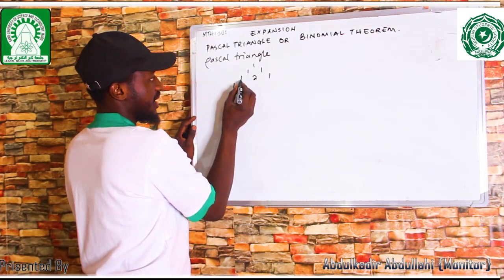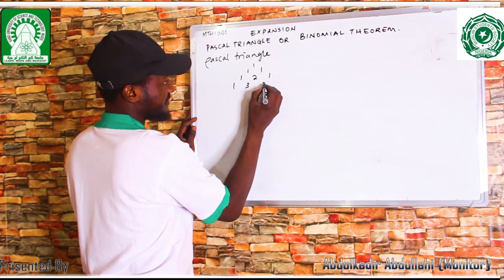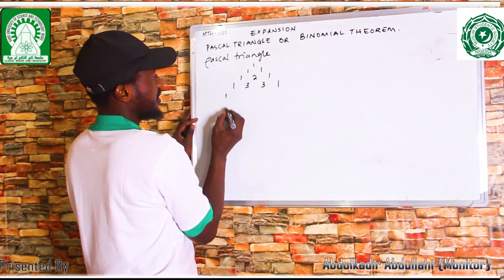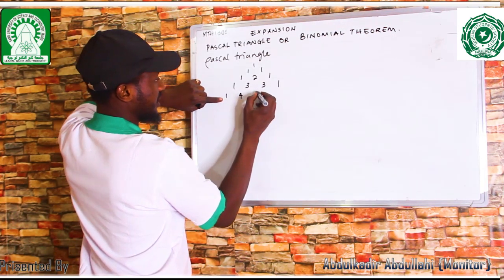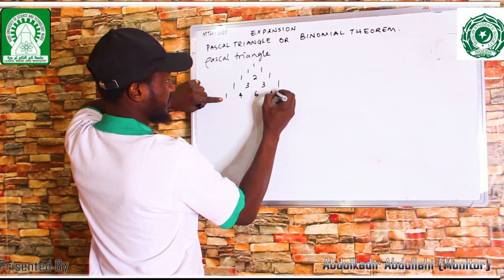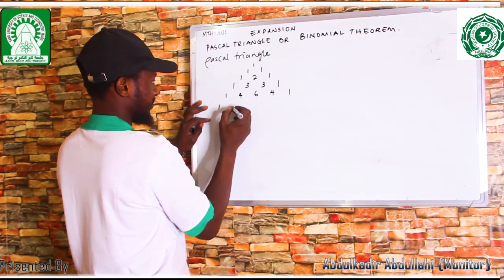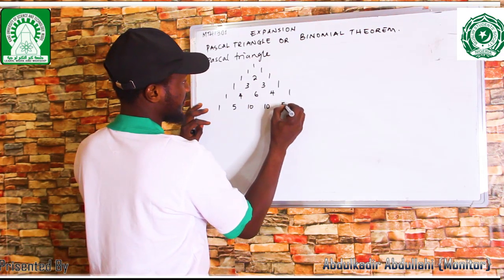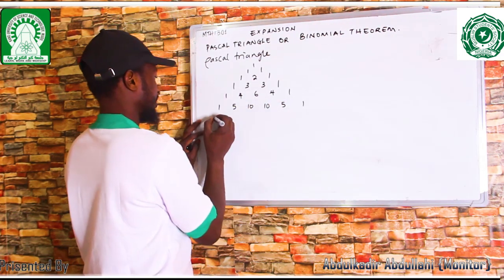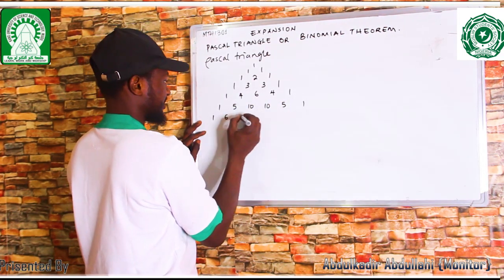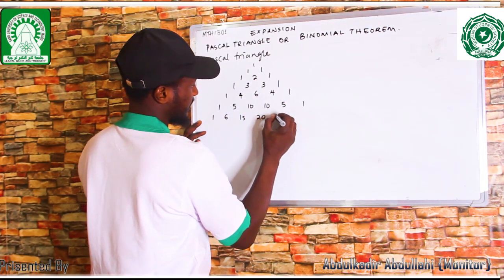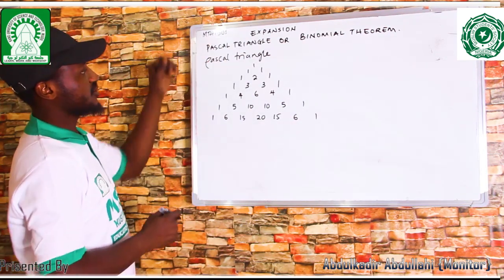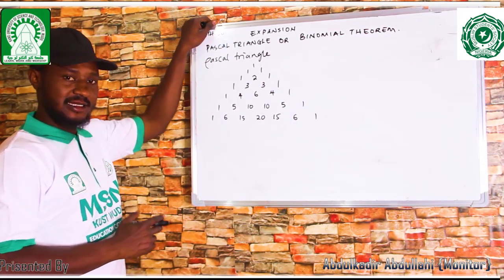Drop another 1, add — you have 3, add here — you have 3, and you close with 1. Drop another one: 1, 4, 6, 4, 1. Then 1, 5, 10, 10, 5, 1. Then 1, 6, 15, 20, 15, 6, 1. This is what we call Pascal's Triangle.